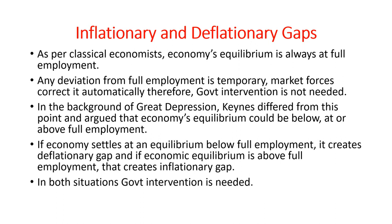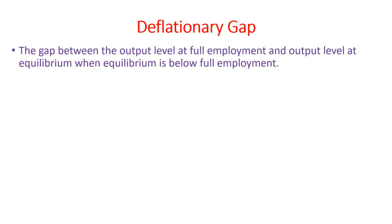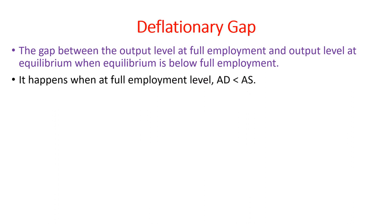Now we study the deflationary gap. The gap between the output level at full employment and the output level at equilibrium, when equilibrium is below full employment, is called the deflationary gap. The deflationary gap happens when at the full employment level, aggregate demand is less than aggregate supply. This lower level of aggregate demand in an economy causes a decrease in the general price level.